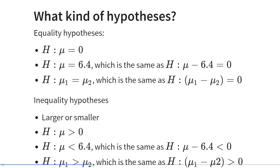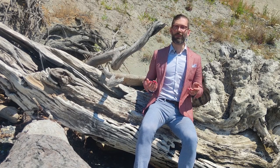Within this course, what kind of hypotheses do we test? First, we can test equality hypotheses. For example, the hypothesis that a mean equals zero — a nil hypothesis about the value of the mean. We could also test the hypothesis that the mean equals 6.4, which is the same as saying mu minus 6.4 equals zero. Another example of an equality hypothesis is that the mean of group one, mu sub one, equals the mean of group two, mu sub two — the same as saying mu one minus mu two equals zero.